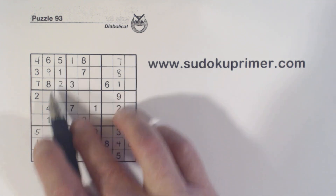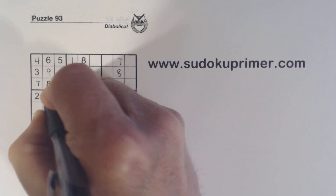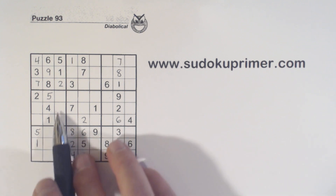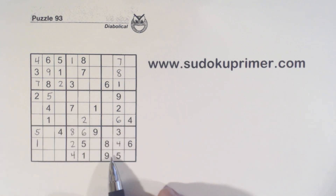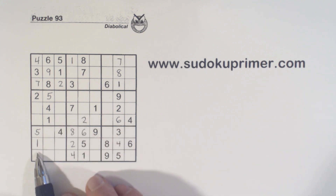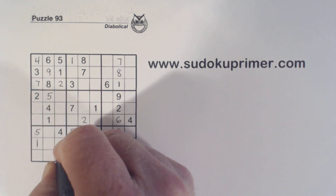And with this five here and this five, we can also put a five there. We've got a nine here and a nine here, so we know that's a nine.